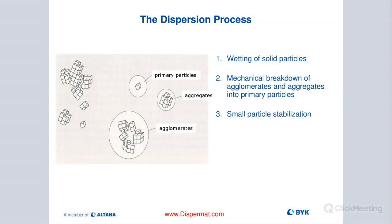From aggregates down to primary particles, that's where we use the different types of milling technologies available — which we cover in part two of this seminar. In the dispersion process, it's really about wetting of these solid particles and the mechanical breakdown of larger agglomerates and aggregates down to primary particle size. Then, with the right additive, we have to keep these particles in a suspended state and stabilize them.